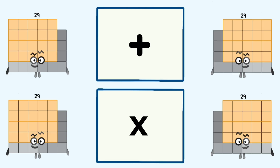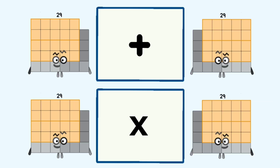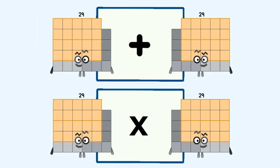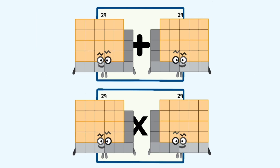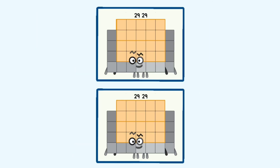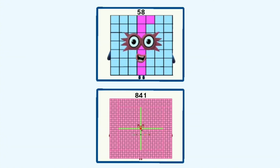29 plus 29 and 29 times 29 equals 58 and 841.